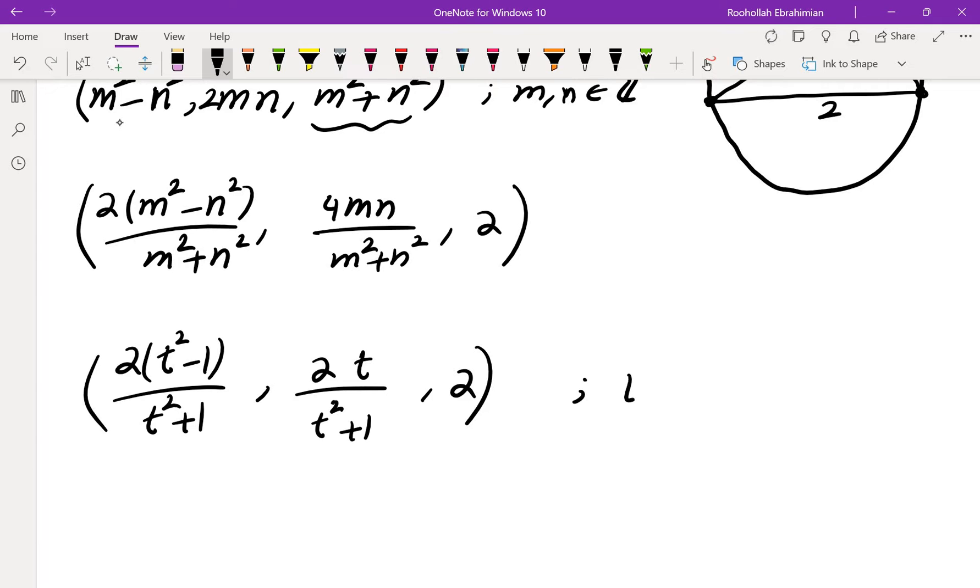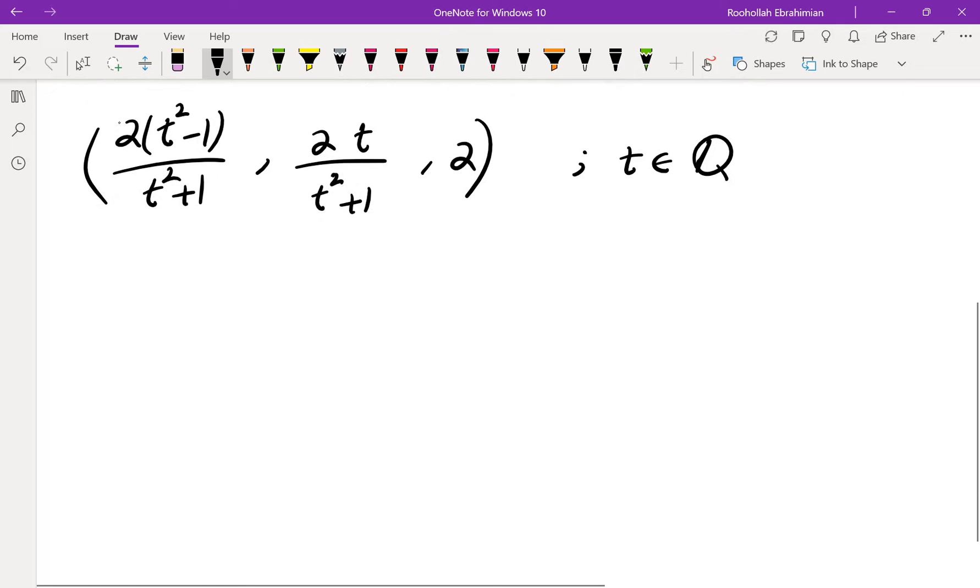So if I take a rational number t then I will get a right triangle. And of course we can change t and we will get infinitely many right triangles with hypotenuse 2 and rational sides. But how do we fit them in the unit circle?